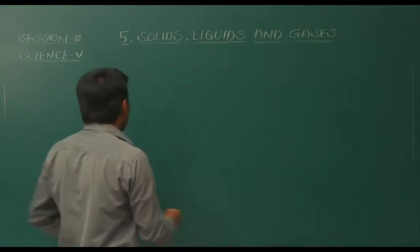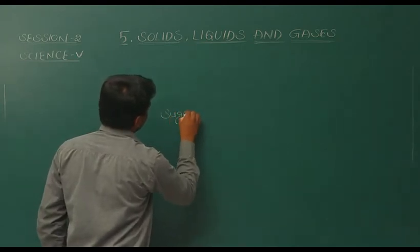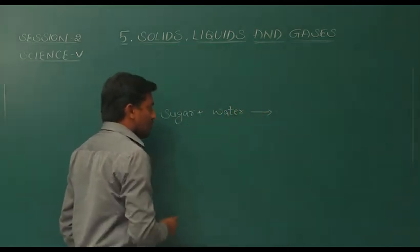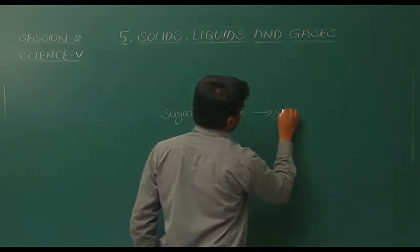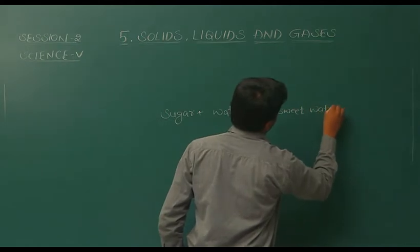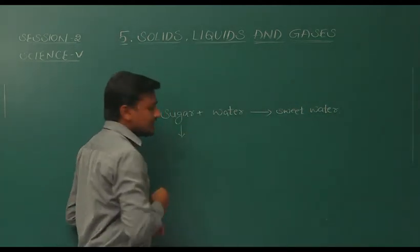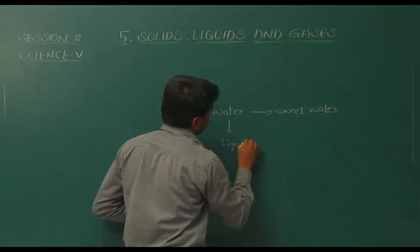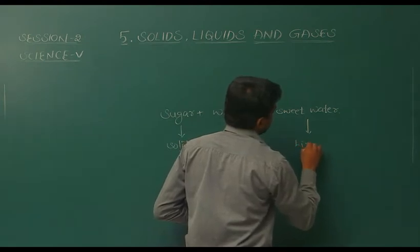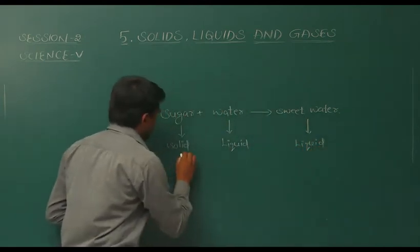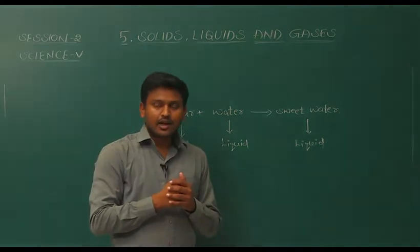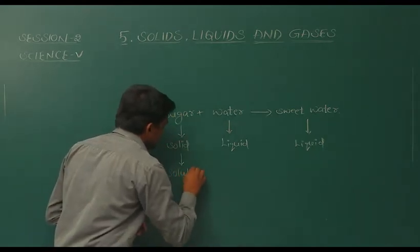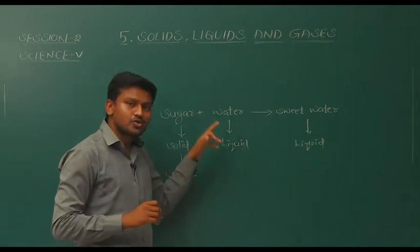Now let us explain another important term. For example, if we take sugar water — if we add sugar to the water, we will get sweet water. Sugar is a solid substance, water is a liquid substance, and the result is again a liquid substance. The solid substance which dissolves in a liquid is called a solute.